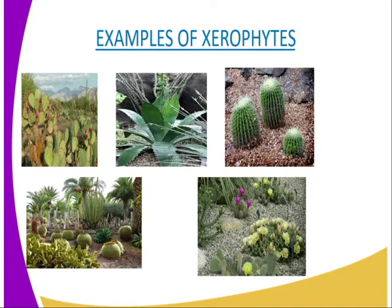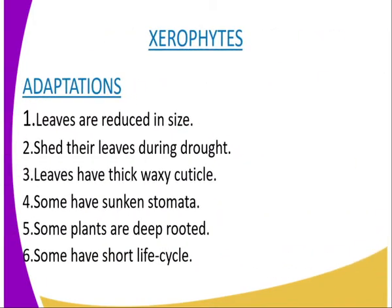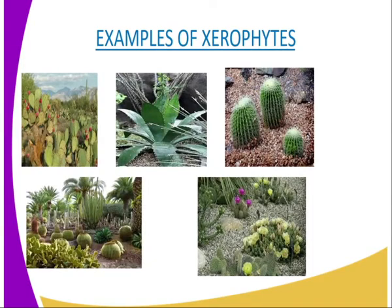Fourth, some leaves are folded to reduce the rate of transpiration by not exposing stomata to environmental factors. Fifth, some have sunken stomata which accumulate moisture in sub-stomatal air spaces, leading to a low diffusion gradient, thus reducing the transpiration rate. Sixth, most xerophytes show a reduced number of stomata, which lowers the rate of transpiration. Seventh, some xerophytes experience a reverse stomatal rhythm — opening the stomata at night and closing them by day — to prevent excessive loss of water by transpiration.